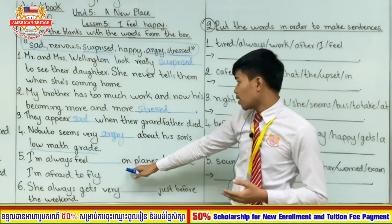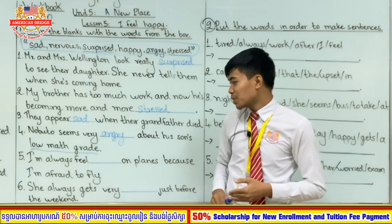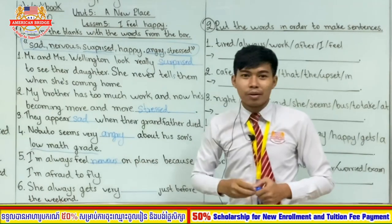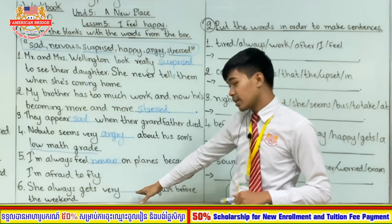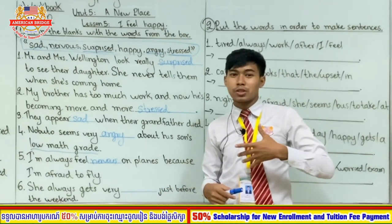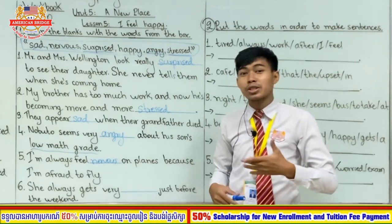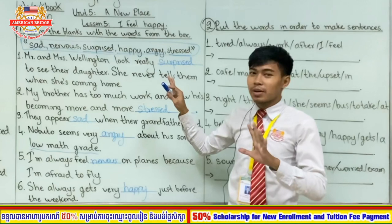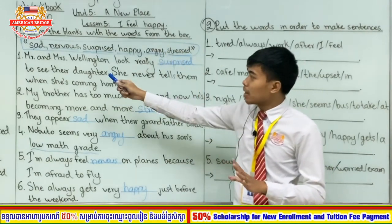Number five: I always feel blank on planes because I'm afraid to fly. When you are afraid of something, you feel nervous. So the answer is nervous. We have only one word left, so number six: she always gets really happy just before the weekend — on the weekend we can go somewhere we want to go, so she gets very happy.